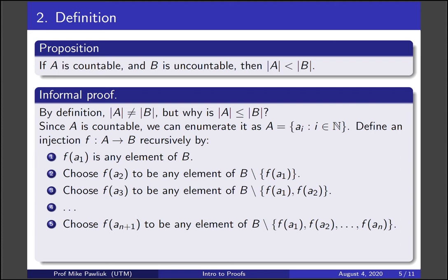And will it be an injection? Well, you can note that for two different indices i and j, then f of Ai and f of Aj have to be different by construction. We always choose the later one so that it wouldn't contain the earlier ones. It wouldn't be one of the earlier ones. So f is an injection. This proof can be summarized as pick f of A1 to be anything, pick f of A2 to be anything new, pick f of A3 to be anything else, and just keep on picking new things. And this will give you an injection.